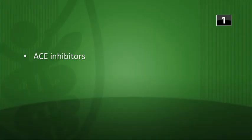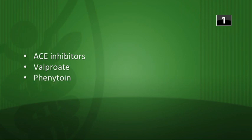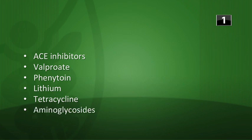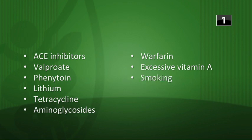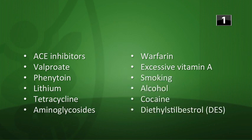It's time for the three-question warm-up for PharmBasics 9. What substances are known teratogens? List as many as you can recall. The more testable ones include ACE inhibitors, valproate, phenytoin, lithium, tetracycline, aminoglycosides, warfarin, excessive vitamin A, smoking, alcohol, cocaine, and diethylstilbestrol (DES).